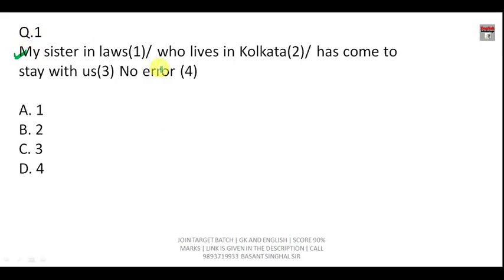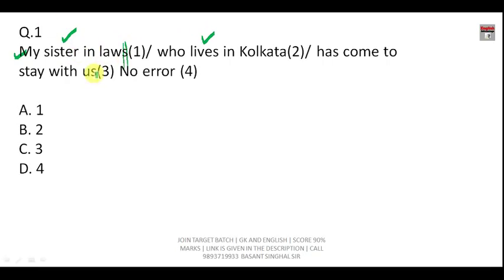Question number one belongs to the spotting error part. The sentence is: 'My sister-in-law who lives in Kolkata has come to stay with us.' Sister-in-law, father-in-law, and mother-in-law are examples of compound nouns. To make a compound noun singular, you delete the S from the end; to make it plural, you add the S to the chief word. So the answer is the first option.